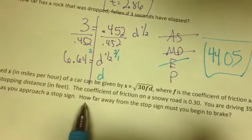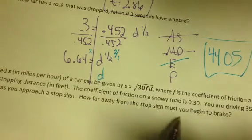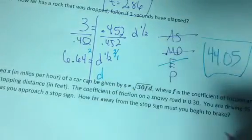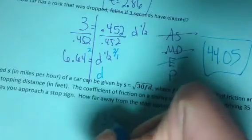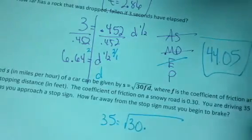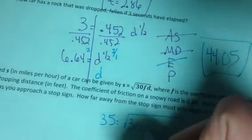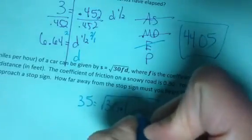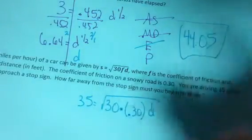We're going to figure out the distance. How far away from the stop sign do I have to brake? S, I know, is 35 miles per hour. I know the friction is 0.30, so that's multiplication times. Here's the 0.30 for F, and I'm going to figure out D.